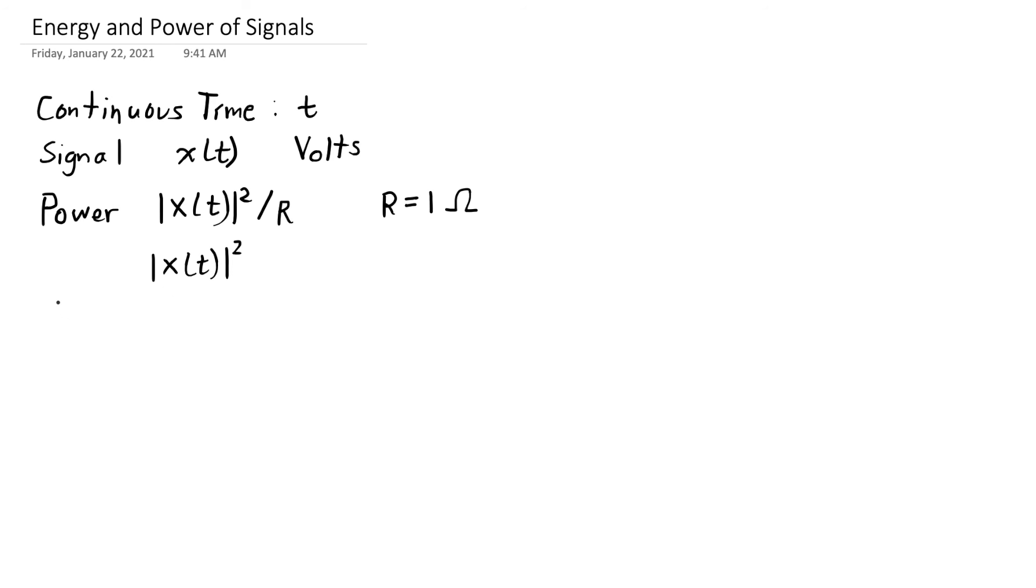We also talk about the average power. The average power in the continuous time case means that we integrate over time, we integrate the instantaneous power |x(t)|² over time. We do it over some period of time. The standard here is to take some period of time that's 2T length, and then divide it by 2T.